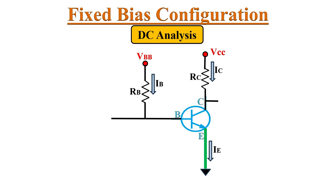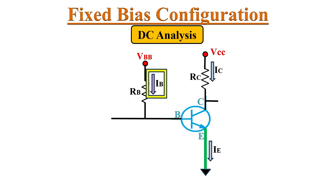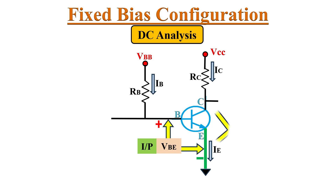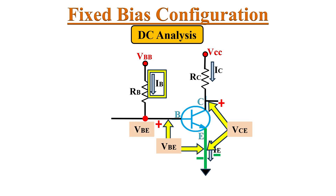This configuration is known as fixed-bias configuration because, for a fixed power supply, if we fix the value of the base resistor RB, then the base current IB will also get fixed. The voltage VBE is the voltage on the input side, while VCE is the voltage on the output side. The base current IB equals VBB minus VBE divided by RB. Since the typical value of VBE equals 0.7V, once we set the value of RB for a given supply voltage, the base current IB will get fixed.